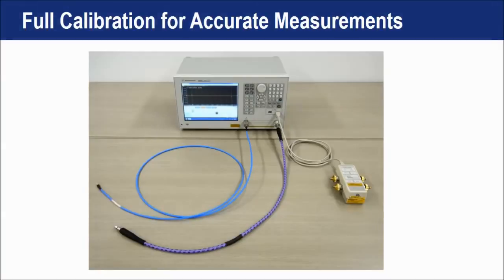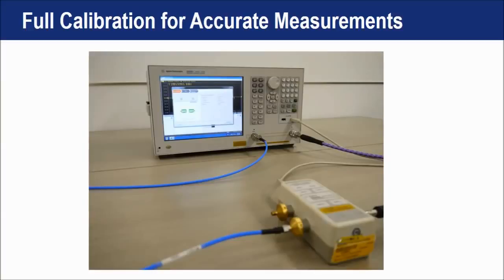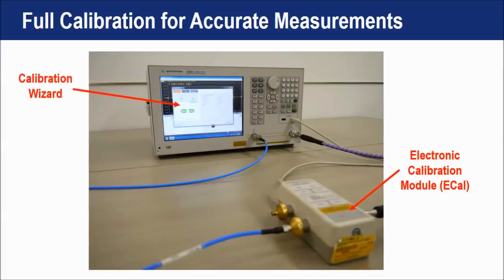The E5063A PCB analyzer supports full calibration to remove all error factors in the measurement system. Full calibration can be performed quickly and easily using an electronic calibration module. The E5063A PCB analyzer has a calibration wizard to guide you through the calibration steps.